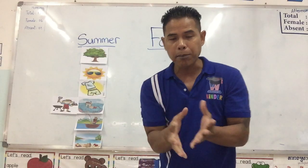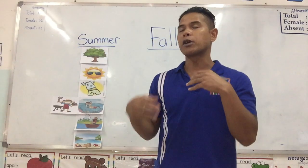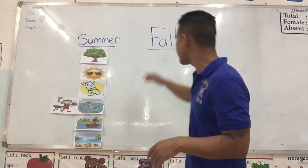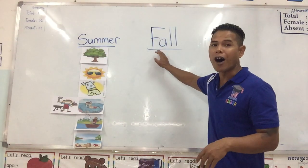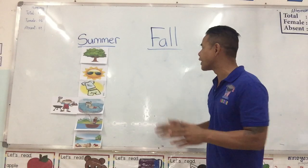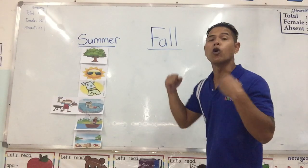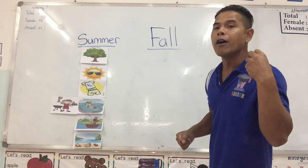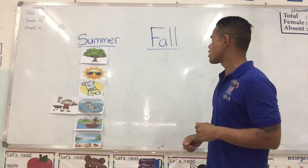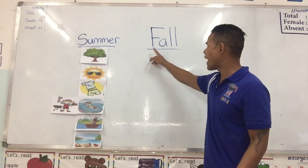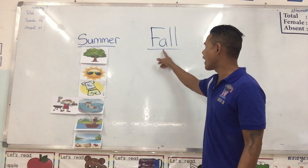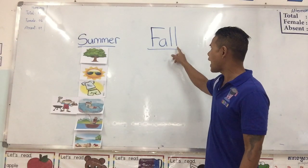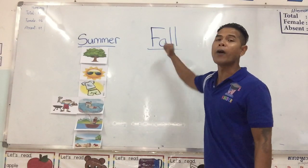So, after summer, the season that follows summer is fall. Let's spell fall out together. Fall — F-A-L-L. Fall.